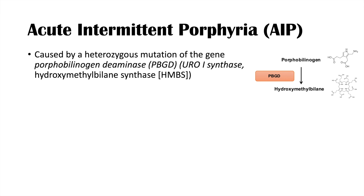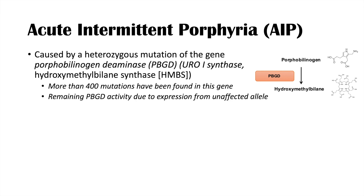With regards to porphobilinogen deaminase in AIP, there have actually been more than 400 mutations found in this gene. One of the porphobilinogen deaminase gene alleles becomes affected, and the remaining porphobilinogen deaminase activity is due to the unaffected allele. So you still have activity of the enzyme, but it's just at a reduced amount.